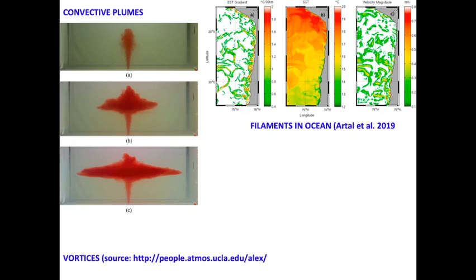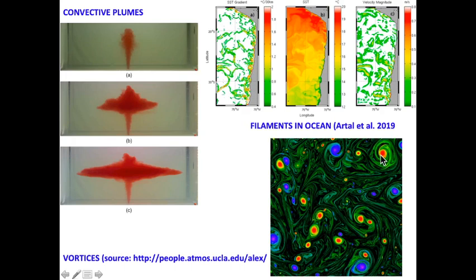That is why these submesoscale processes or systems are a very important, integral part of weather dynamics and models. Since models are not able to resolve them, this is one of the reasons why we have very high variability in weather system predictions and rainfall predictions. The length scales of these vortices are typically less than 10 kilometers.